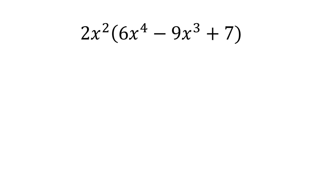Welcome, my friends. Consider 2x squared multiplied by 6x to the fourth minus 9x to the third plus 7.